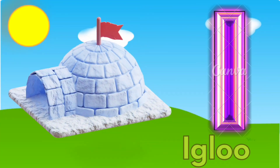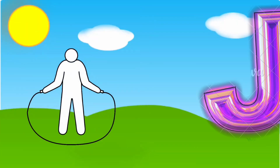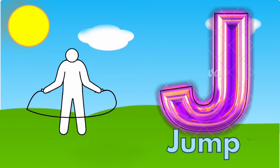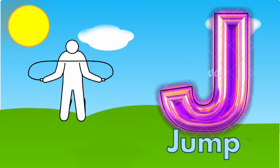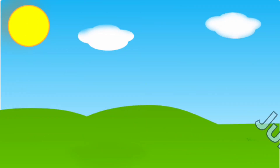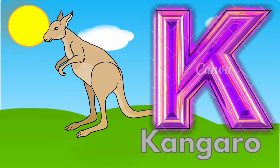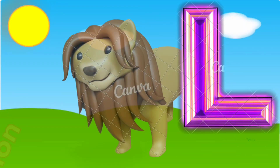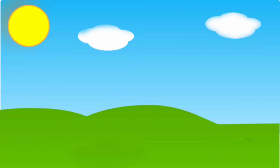I is for Igloo, I-I-Igloo. J is for Jump, J-J-Jump. K is for Kangaroo, K-K-Kangaroo. L is for Lion, L-L-Lion.